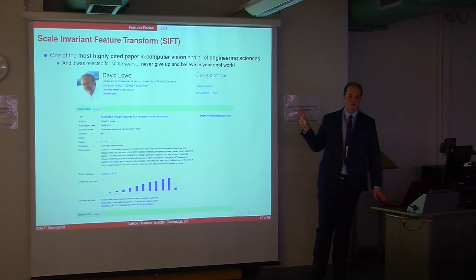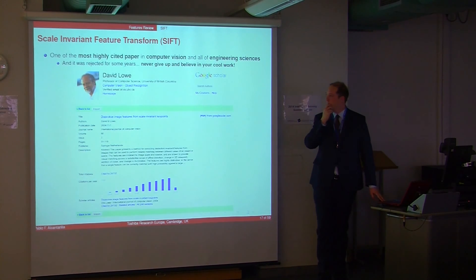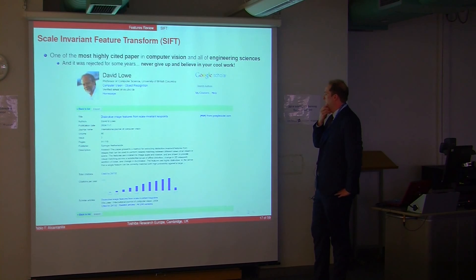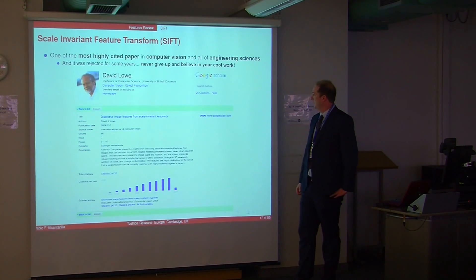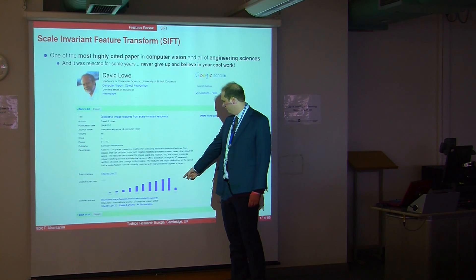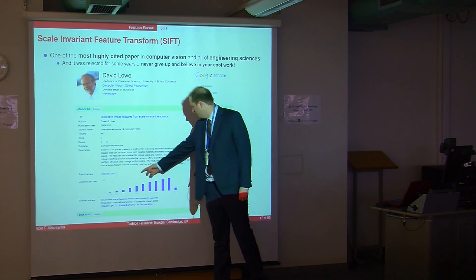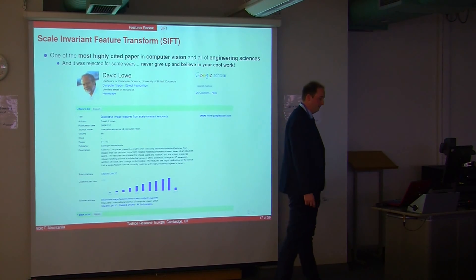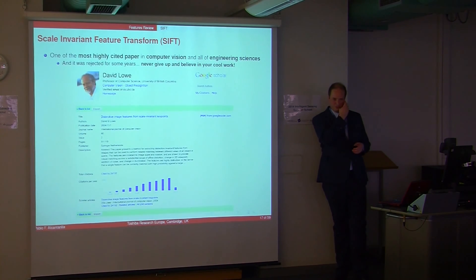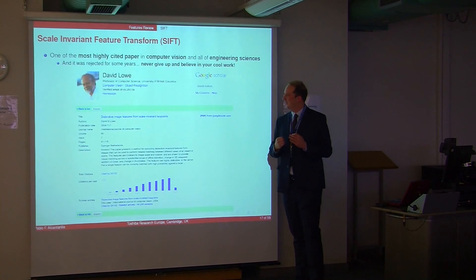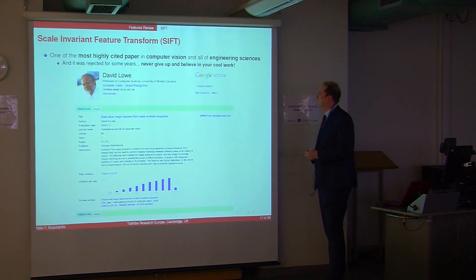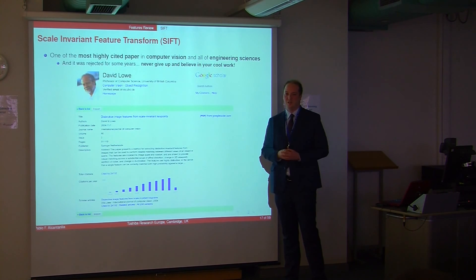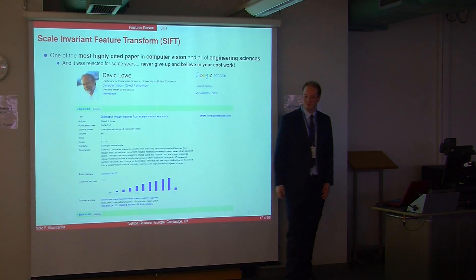This is possibly one of the most important slides of the talk. SIFT is one of the most highly cited papers in computer vision and possibly all engineering sciences, and it was rejected several times — maybe twice or three times. It now has around 24,000 citations. When I get a paper rejected, I try better and harder. If you think you have a cool idea, never give up — maybe someday you can get 24,000 citations.